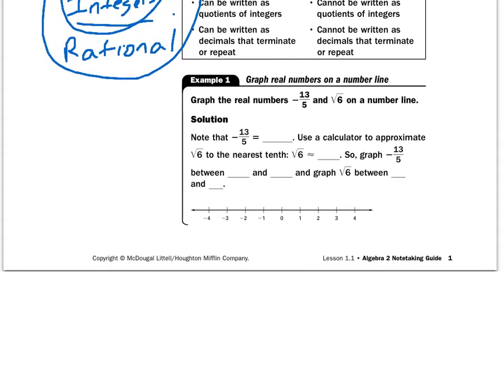Okay, let's take a look at example one. It says, graph the real numbers, negative 13 fifths and the square root of 6 on a number line. Well, negative 13 fifths, 5 goes into 13 two times, so it's like negative 2.6, it's about right there. And the square root of 6 is, it's almost like right in here somewhere. Put that on your calculator, you'd find that that's about 2.4. And this is negative 2.6, and so we graph those right there on our number line.